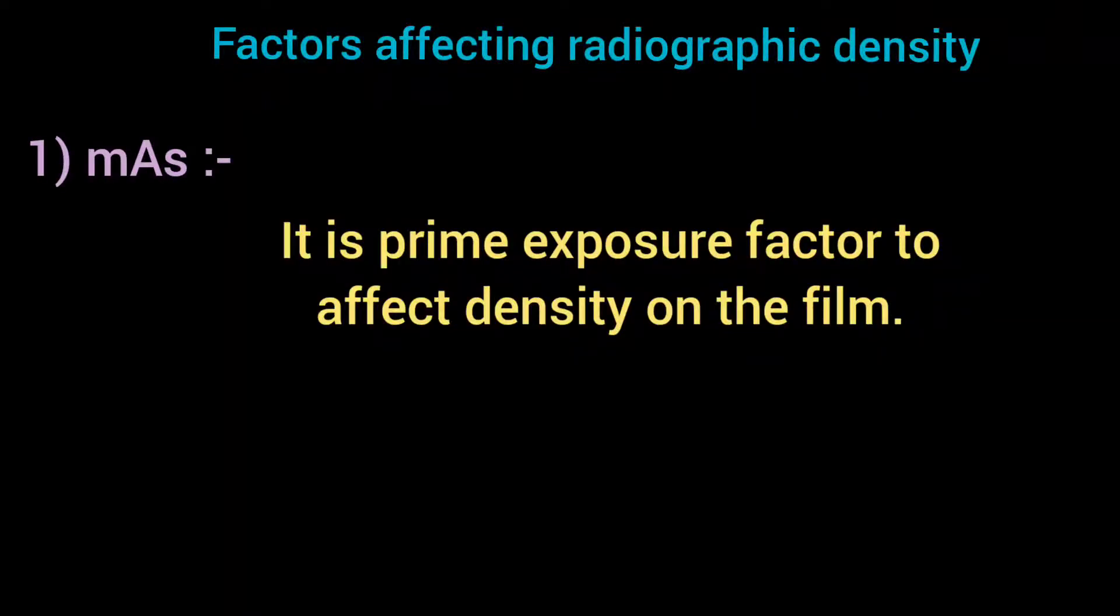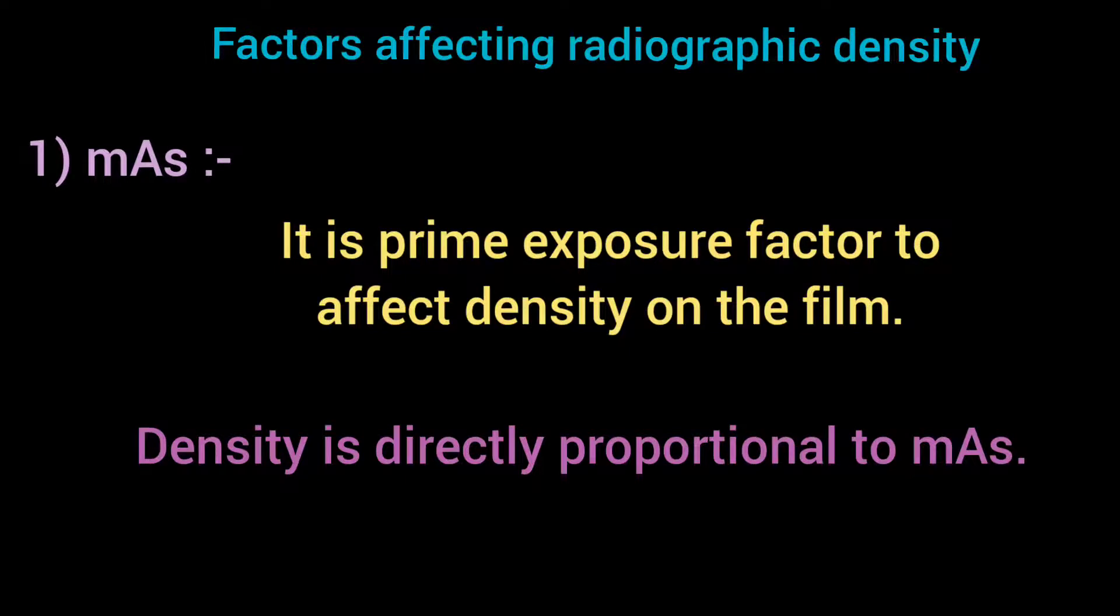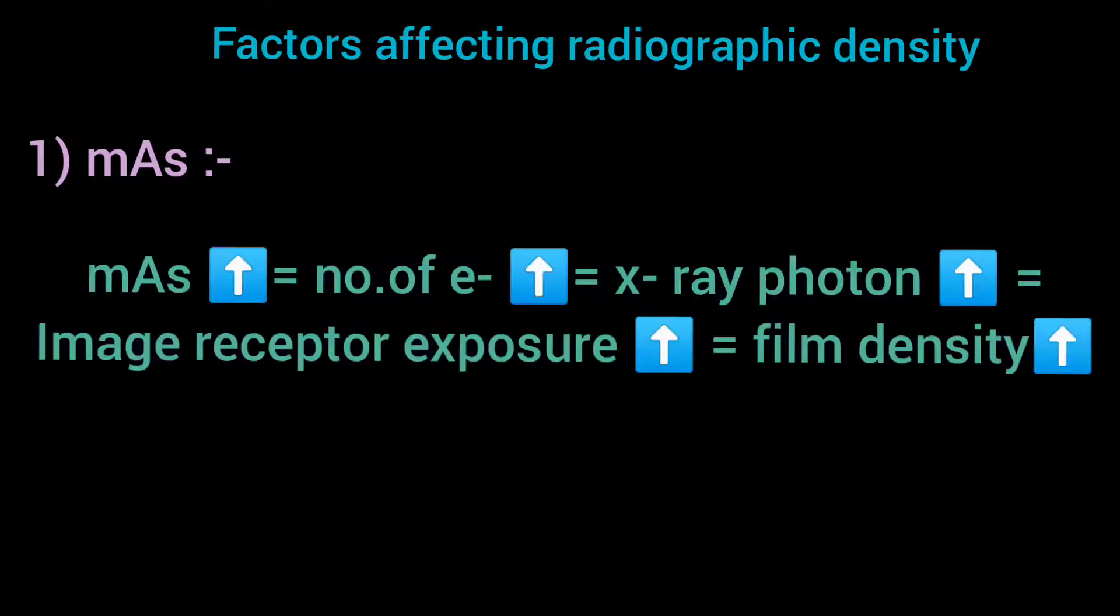The density on the film is measured by a device called densitometer. Factors affecting radiographic density: mAs is a prime exposure factor affecting radiographic density. Density is directly proportional to mAs. Increasing mAs increases the number of X-ray photons produced, which results in increased image receptor exposure and overall film density.